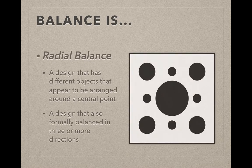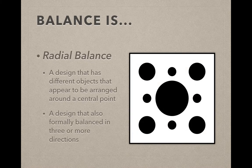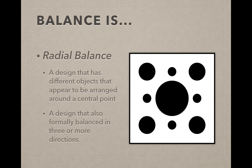Radial balance is a design that has different objects that appear to be arranged around a central point. It also needs to have formal balance in three or more directions, by my definition.